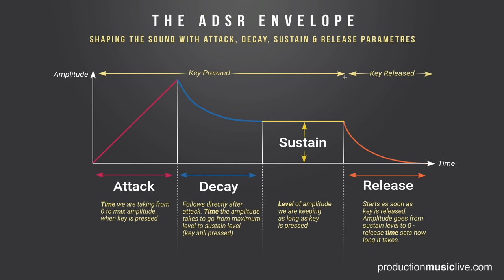Once we are releasing the key, what follows is the release time, taking the amplitude back from whatever level we were at back to zero. Sometimes you want to do that very short, and sometimes you want it longer to just fade out your sound smoothly. So if you want smooth sounds, in the beginning you have a longer attack time and in the end a longer release time.